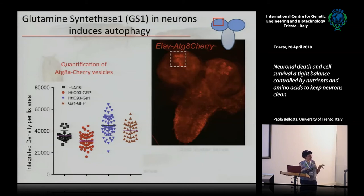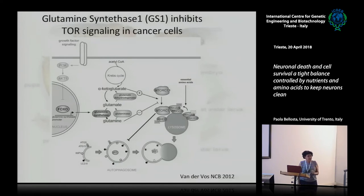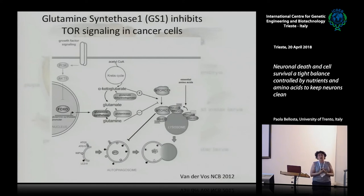Until now, everything makes sense. But here is the 'but.' GS1 is producing glutamine — glutamine is an amino acid — TOR signaling is stimulated by amino acids — but TOR signaling should be reduced in order for autophagy to occur. Something doesn't really fit the picture.